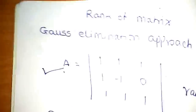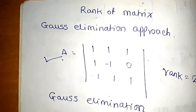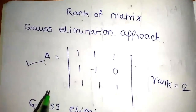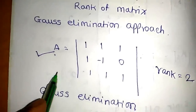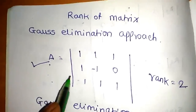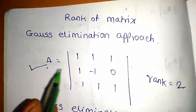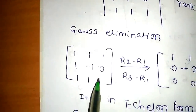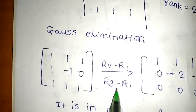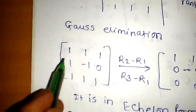This is the first method using determinants. Now here is another method — the Gauss elimination approach. Such questions will be asked in your GATE examination or other quantitative aptitude examinations. We have matrix A: 1, 1, 1, 1, −1, 0, 1, 1, 1. We apply the operations R2 minus R1 and R3 minus R1.